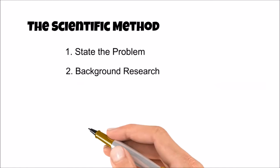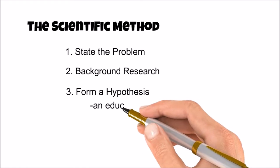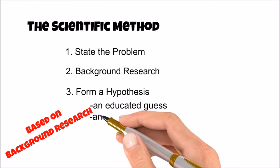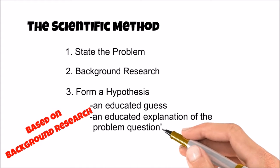The third step of the scientific method is to form a hypothesis. A hypothesis is often defined as an educated guess. This guess about the problem question is considered educated because the scientist has done the background research into the problem and now is making an educated explanation as to the problem question's answer.